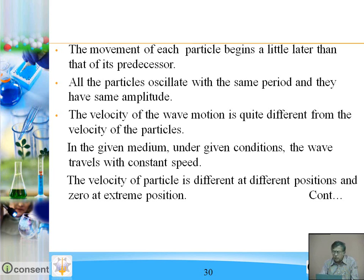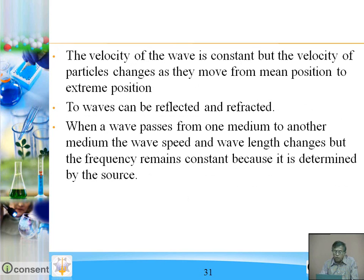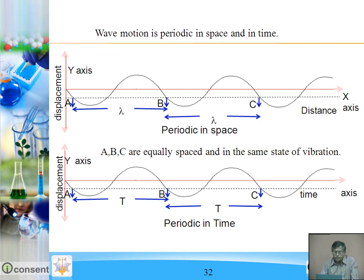The movement of each particle begins a little later than that of its predecessor. All the particles oscillate with the same period and have the same amplitude. The velocity of the wave motion is quite different from the velocity of the particles. In a given medium under given conditions, the wave travels with constant speed. The velocity of particles is different at different positions and zero at extreme positions. When a wave passes from one medium to another, the wave speed and wavelength change, but the frequency remains constant because it is determined by the source, that is, by the vibrator.